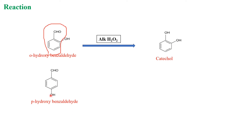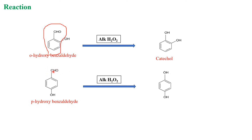Another example: here we have para-hydroxybenzaldehyde, where the hydroxy group is in the para position. This is treated with alkaline hydrogen peroxide, and the aldehyde is converted to a hydroxy group. The product is called quinol, which is a phenol. So if you take aryl aldehydes or ketones having hydroxy or amino groups in ortho or para positions and treat with alkaline hydrogen peroxide, you get phenols — catechol and quinol are examples.